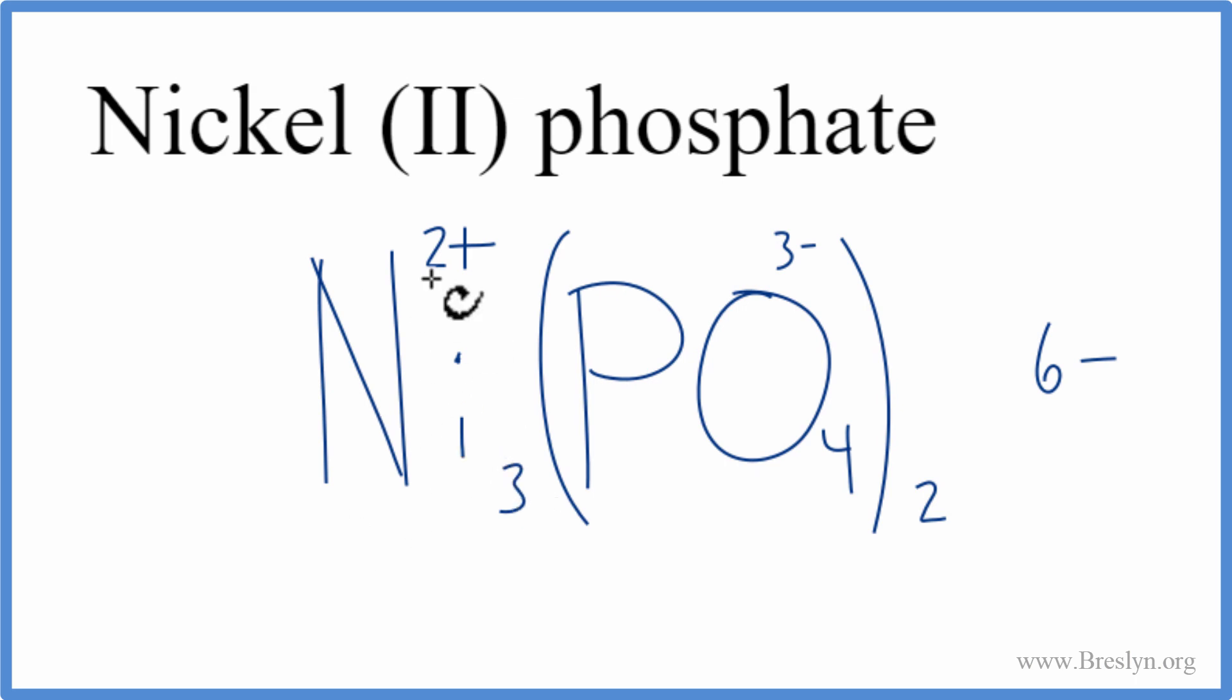Three of the nickels, three times the two plus. That's six plus. Six plus, six minus. That adds up to zero. The net charge is zero. This is the correct formula for nickel two phosphate.